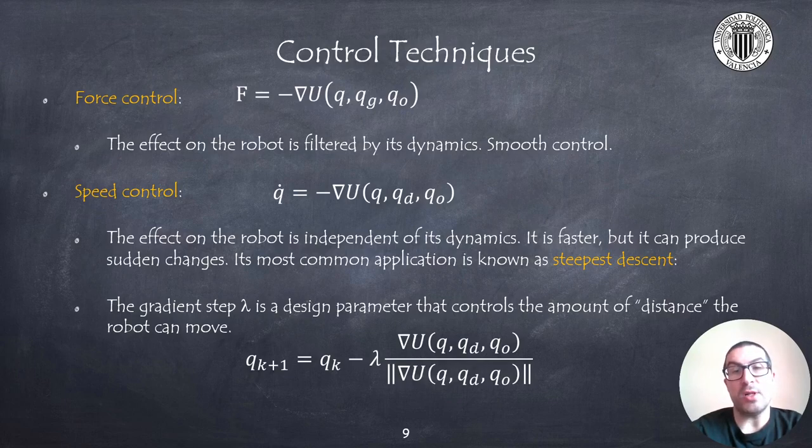Another common alternative is to establish speed control so that the speed is proportional to the gradient. In this case, the most common implementation is the steepest descent method that uses the unitary gradient vector and a step size that controls how much the robot moves from one iteration to another with the lambda parameter.